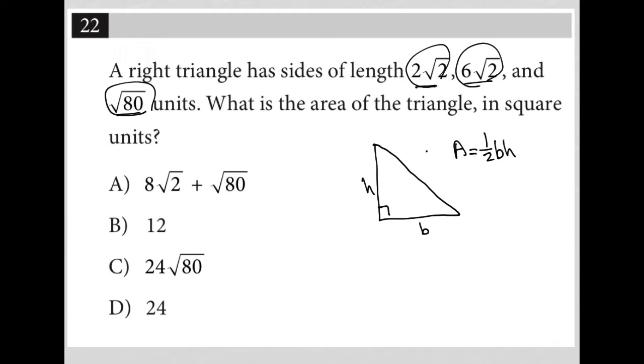So I know that the hypotenuse, which is this long side here, should be the longest of the three. And then the smaller two, I don't really care which one I put in the height and which one I place at the base. So 2√2 seems like it's going to be the smallest one, so I'm going to call that my base.